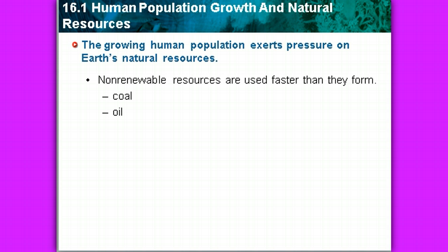We talked in the nitrogen cycle and the carbon cycle about some of these resources. Specifically, in the carbon cycle, we talked about our burning and combustion of fossil fuels. Coal and oil are two of those non-renewable sources.